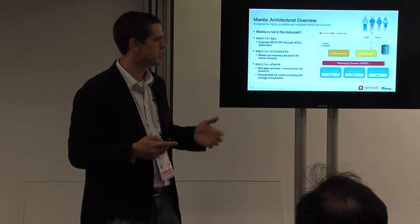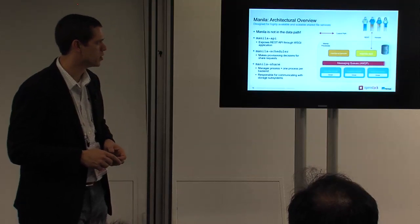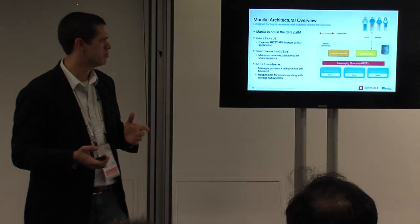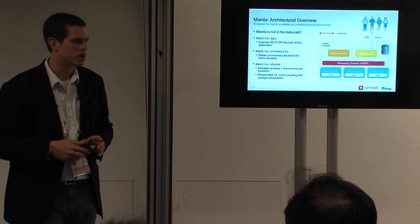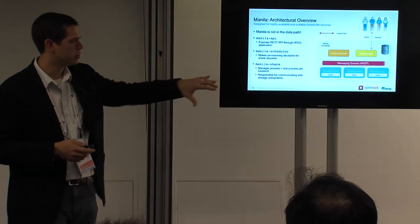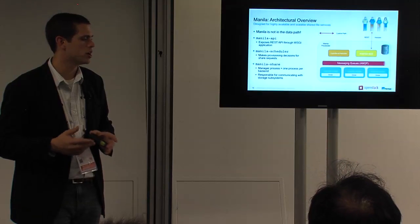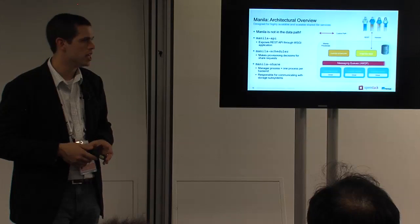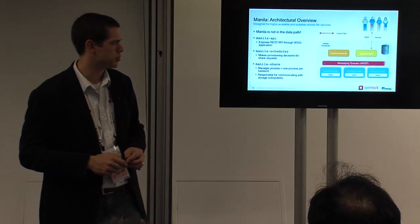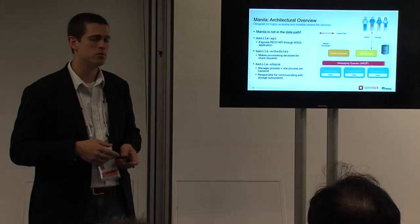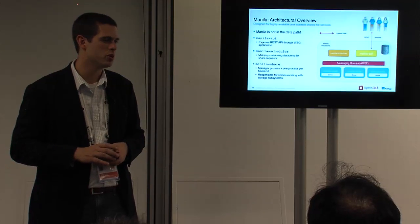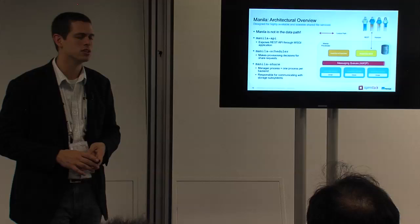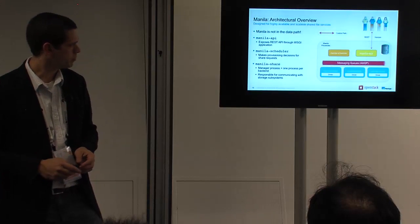At a high architectural view: we require a SQL database, we have an API Python process running off the WSGI framework, the scheduler exists as a separate process, those processes talk to one another over AMQP, and then you have one or more share processes that map to individual backends, plus an additional process that acts as the manager of those individual shares. It's the share processes that actually deal with talking to the individual storage subsystem. Also, Manila does not sit in the data path between client and server — it's simply a provisioning and management framework. It'll create things and tell the client and server about each other, but after that it gets out of the way, so there's no new performance implication from the Manila processes.